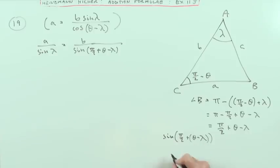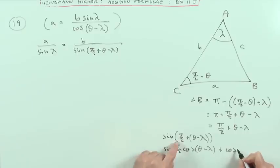So that's the sine of the sum of two angles. So I've got the sine of pi upon 2 times the cos of theta minus lambda plus, reverse it, the cos of pi upon 2 times the sine of theta minus lambda.